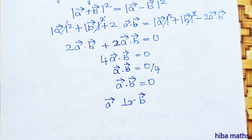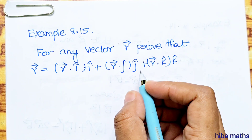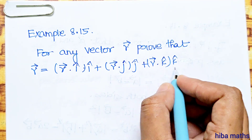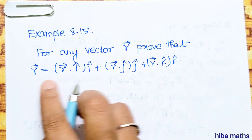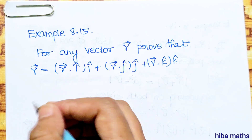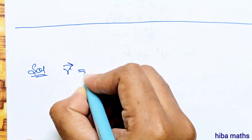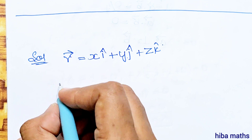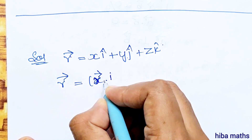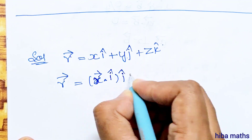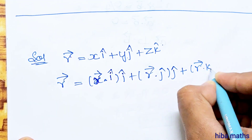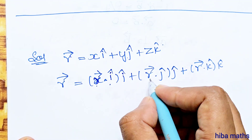Example 8.15: For any vector r, prove that vector r is equal to (vector r dot i) times i plus (vector r dot j) times j plus (vector r dot k) times k. Solution: Let vector r equal xi plus yj plus zk. We need to prove that r equals (r dot i) times i plus (r dot j) times j plus (r dot k) times k.